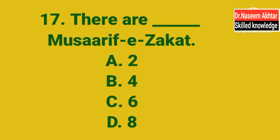MCQ 17: There are dash Masarif-e-Zakat. Zakat کے کتنے مصارف ہیں؟ A. 2, B. 4, C. 6, D. 8. The correct answer is D — 8.